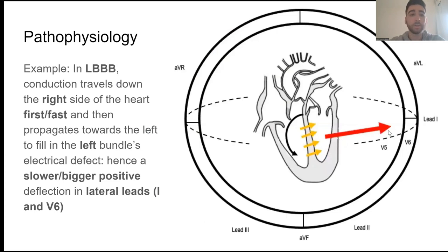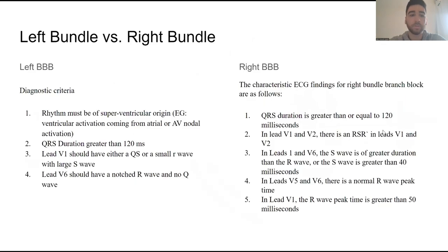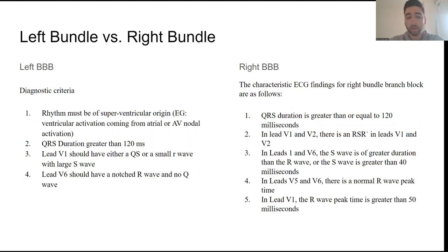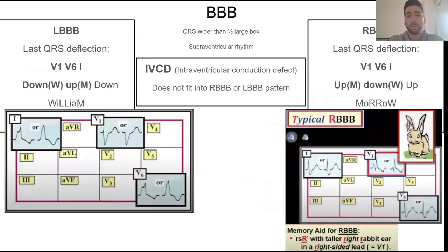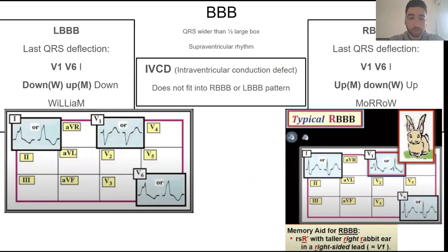This is the diagnostic criteria — you can pause and read it on your own. For a bundle branch block, you have to have a QRS wider than one half of a large box; in reality it should be greater than 0.11 or 0.12 seconds, which is approximately half of a large box, which is 0.2 seconds.